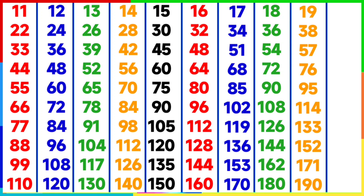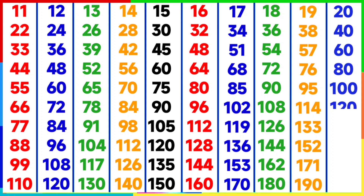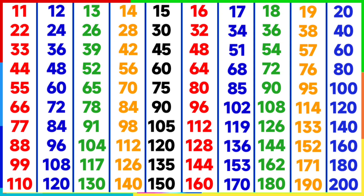19 tens are 190. Table of 20: 20 ones are 20, 20 twos are 40, 20 threes are 60, 20 fours are 80, 20 fives are 100, 20 sixes are 120, 20 sevens are 140, 20 eights are 160, 20 nines are 180, 20 tens are 200.